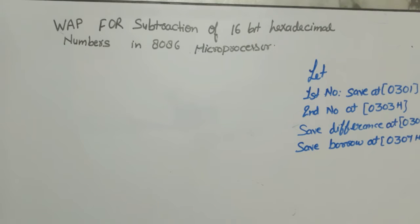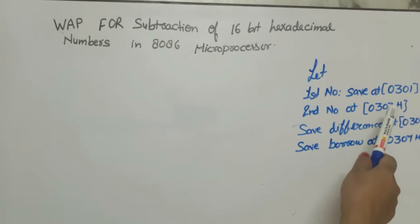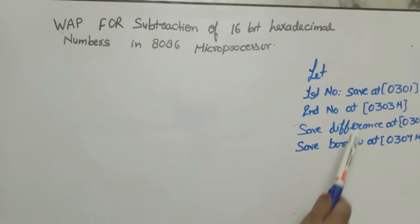Hi everyone, in this video I am going to discuss assembly language program for subtraction of two hexadecimal numbers in 8086 processor. For this I have taken the first number stored at 0301h, second number stored at 0303h, and after subtraction we have to store the result at 0305h and save the borrow at 0307h.